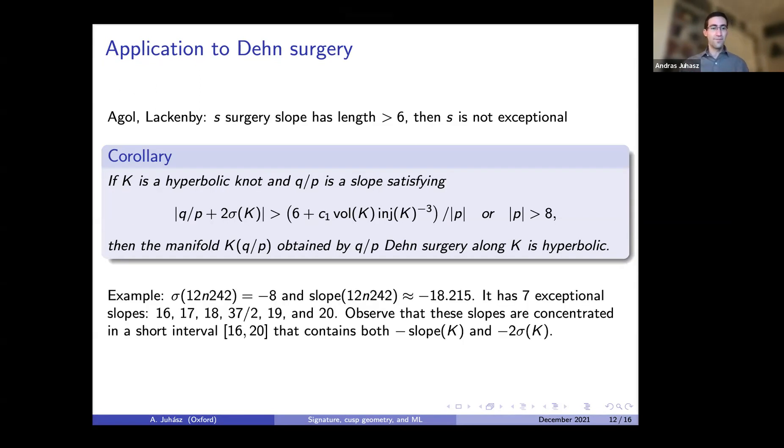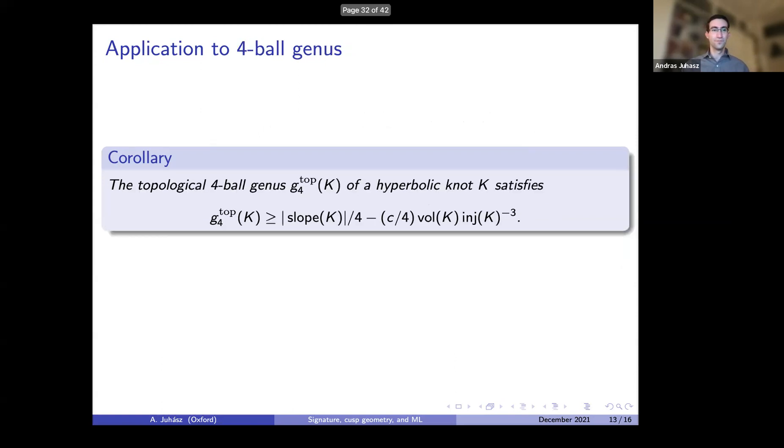Here is an example. If you look at 12n242, which is what we looked at before, it has seven exceptional slopes listed here. They all lie in the interval minus 16 to minus 20, which contains both minus the slope and minus twice the signature. Now, since the signature gives a lower bound on the topological four-genus, if you reverse this theorem, we get that using the hyperbolic geometry, namely the slope, you can get a lower bound on the topological four-genus, which is always kind of surprising.